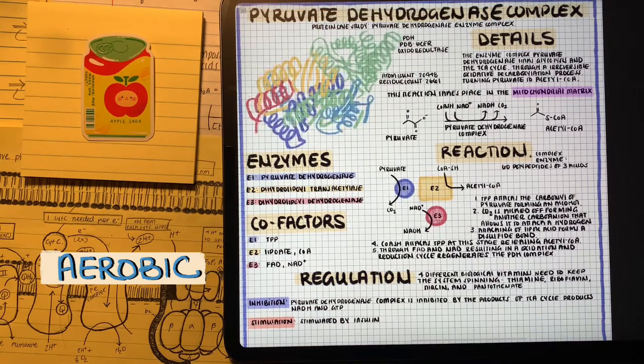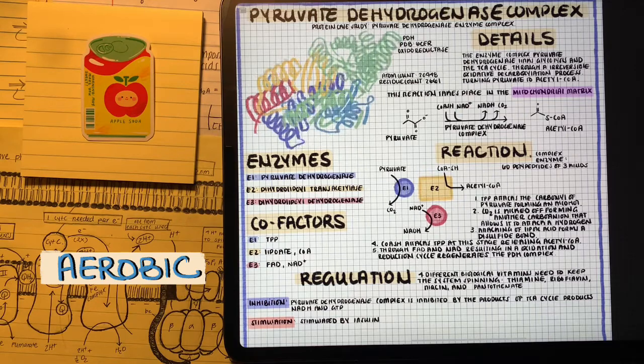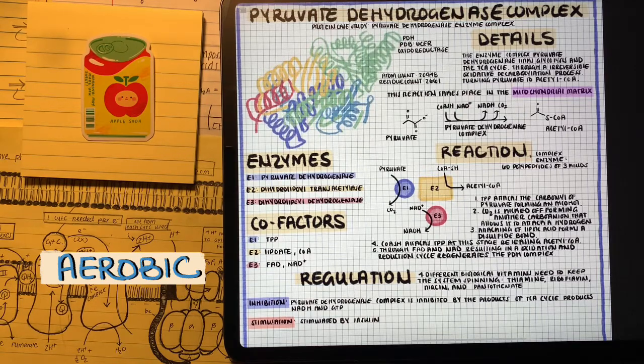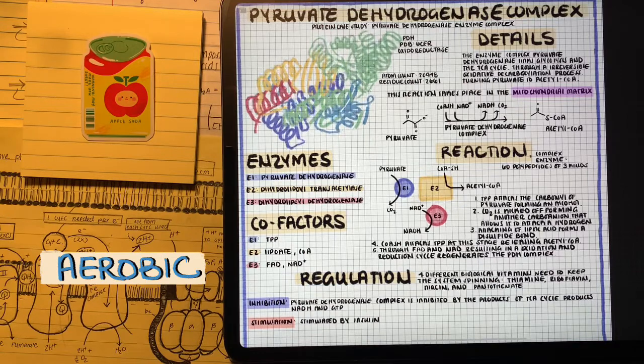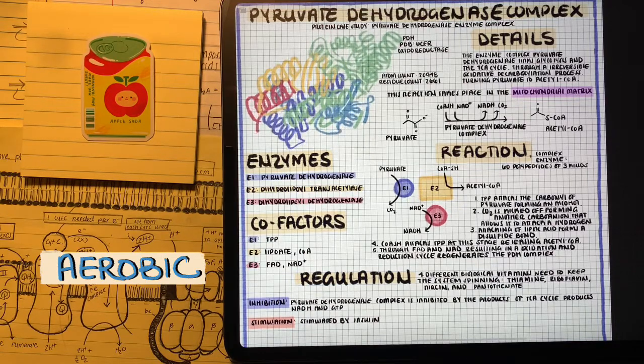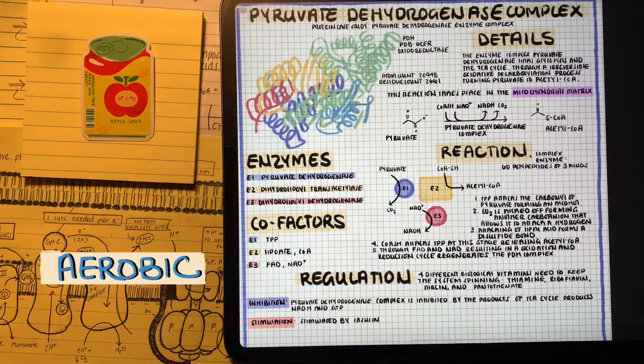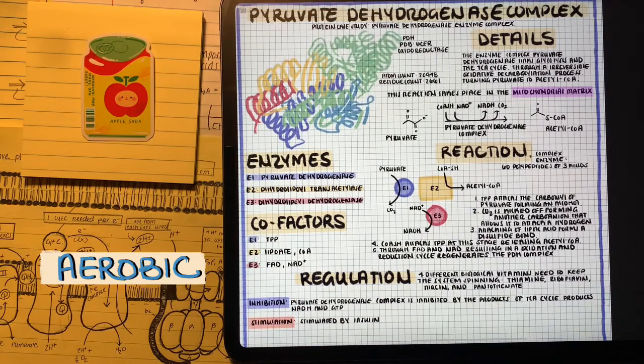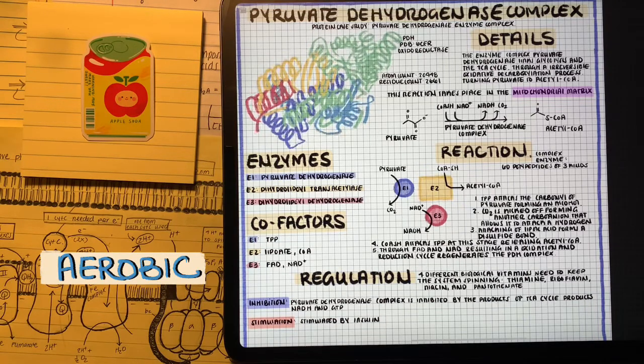We're going to take pyruvate into the mitochondrial matrix to react with the three-enzyme complex, which is huge, pyruvate dehydrogenase complex. This is going to take our pyruvate all the way to acetyl-CoA through oxidation. Acetyl-CoA is then going to enter the Krebs cycle.